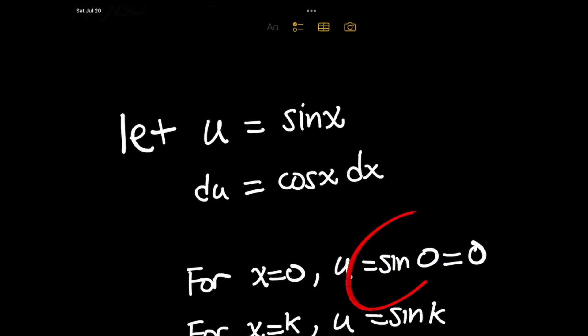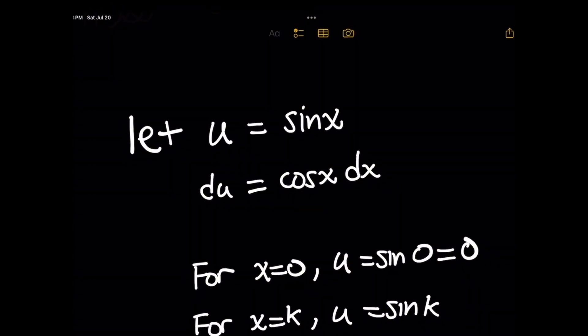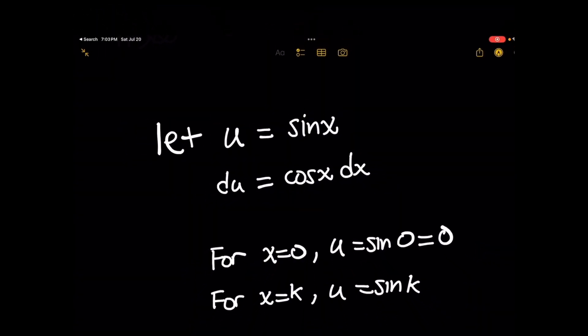Sine of 0 is simply 0. When we repeat this for the upper limit of integration, x equals k, plugging that in gives u equals sine of k.